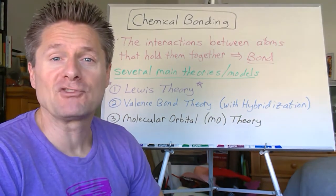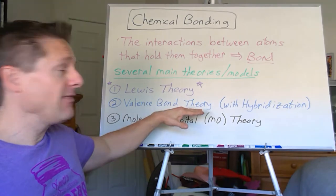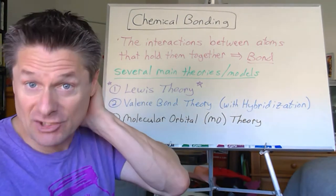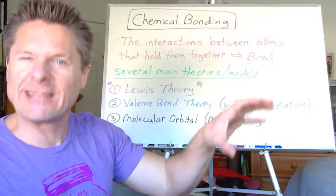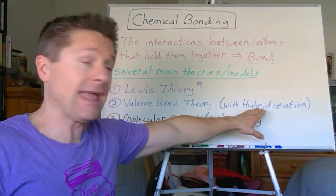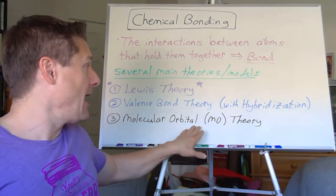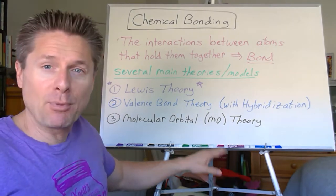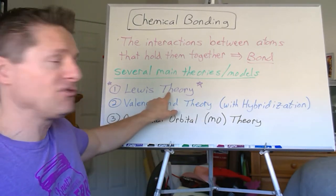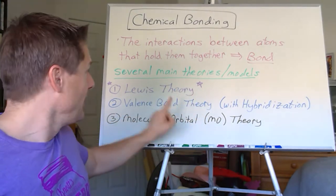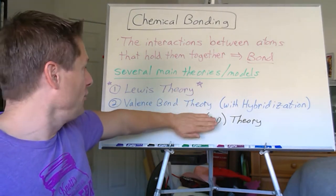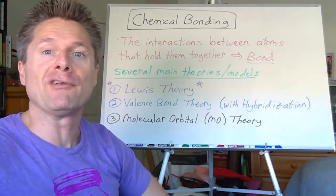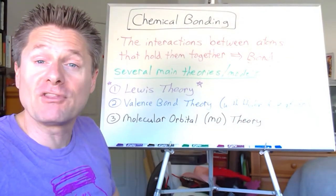Lewis theory is not perfect, but it's great, especially for general chemistry. It works very, very well. If you go to more advanced chemistry, you might need a better model. In some much later topics, we'll get into valence bond theory with hybridization — that's going to be a little more organic-focused. If you take organic chemistry, you definitely want to know your hybridization. And then there's molecular orbital theory, which you'll hit heavily in organic as well.